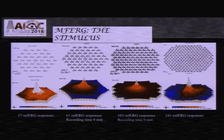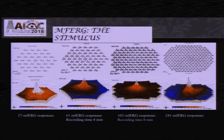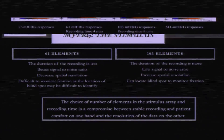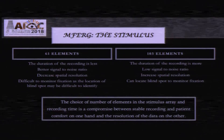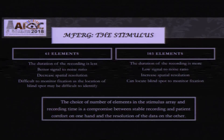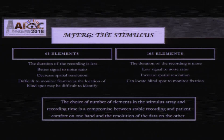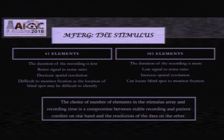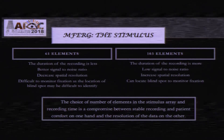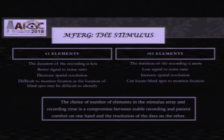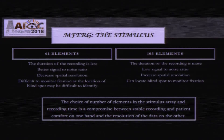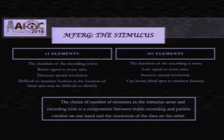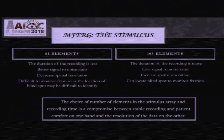You could have a 37 hexagon stimulus, or 61, 103, or 241. Usually 61 and 103 are standardized by the ISCEV. The 61-element stimulus is more comfortable for the patient, signal-to-noise ratio is better, and records are cleaner, but spatial resolution is much lesser compared to 103, so you may still miss some details. For a younger patient you may prefer 61 elements for better cooperation, but for a more detailed examination you would want to do 103.